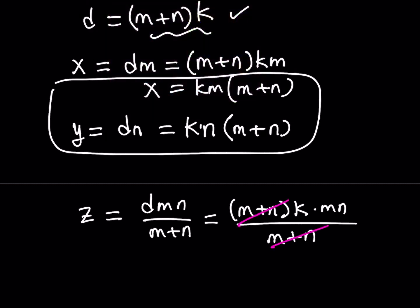Well, the m plus n is going to cancel out. And you're going to get z equals kmn from here. Awesome.